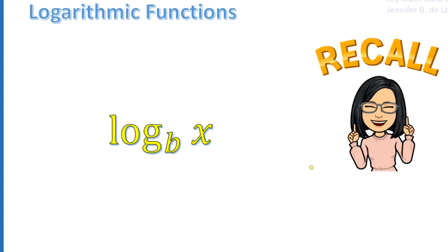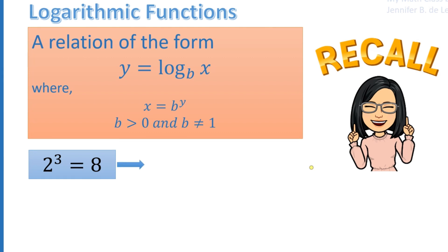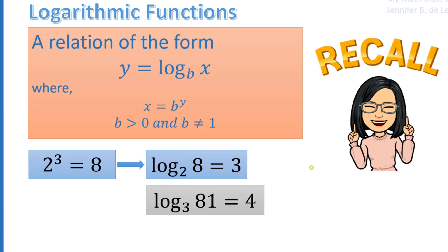Another type of transcendental functions are the logarithmic functions. A logarithmic function of the form y equals the logarithm of x to the base b is the inverse of the exponential function x equals b raised to y, where b is a positive number not equal to 1. For example, 2 raised to the 3rd power equals 8; when written using logarithm, that is the log of 8 to the base 2 equals 3.